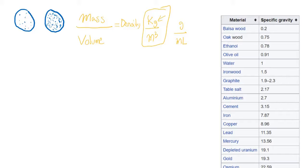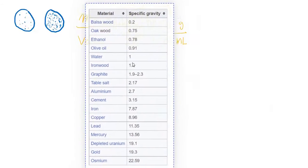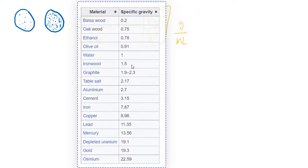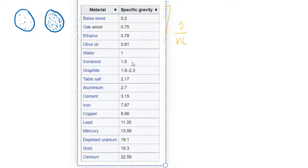Now, what can we talk about with density specifically? Well, there is this value called specific gravity. Specific gravity is essentially the density of a particular material.